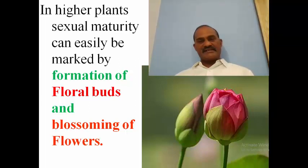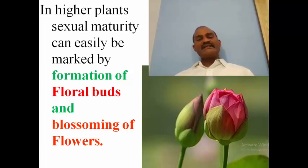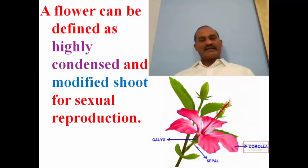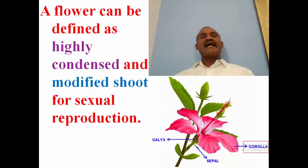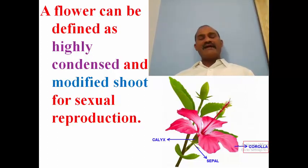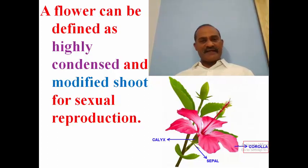A highly specialized nature of reproduction in angiosperms is that they produce flowers, and flower production starts from the floral bud. Once the floral buds develop, they blossom into flowers. The perfect technical definition of a flower you must remember: a flower is defined as a highly condensed and modified shoot, specially for sexual reproduction.